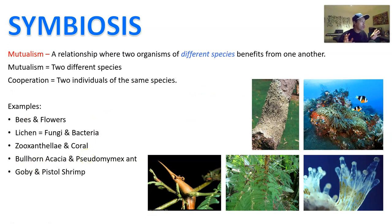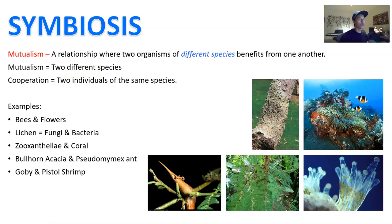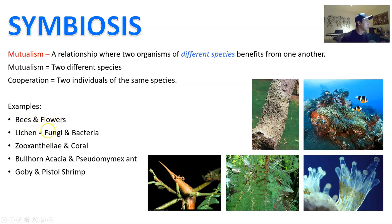Mutualism is where two organisms from different species both benefit from one another. Mutualism is specific to two different species — when they are the same species, we simply call that cooperation. Examples include bees and flowers: bees are pollinators and they pollinate the flowers, getting nectar and pollen in return for their hives. That's a mutualistic relationship.